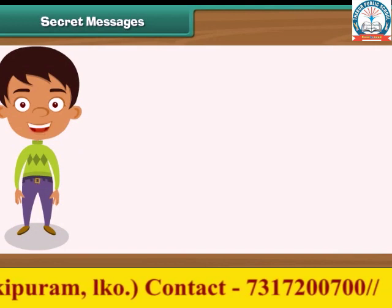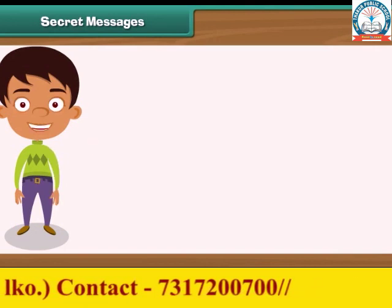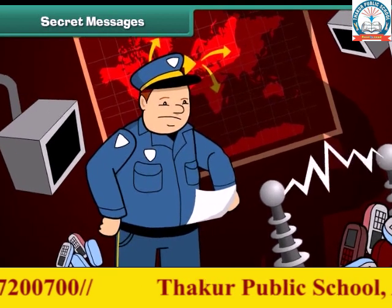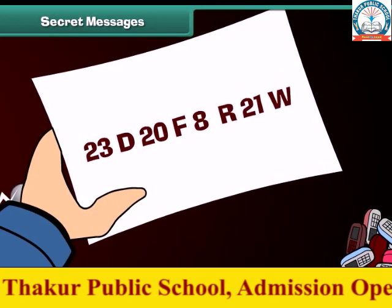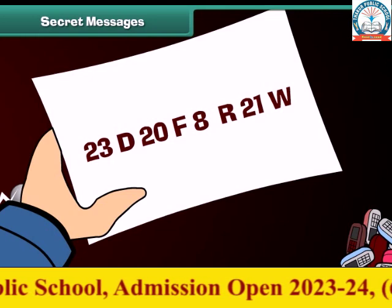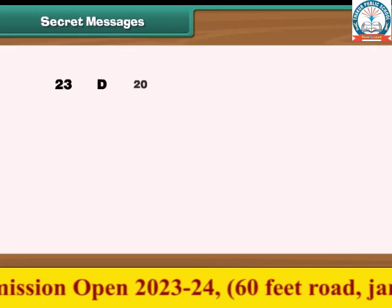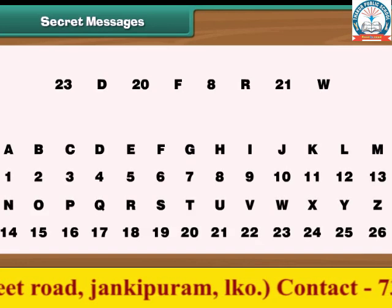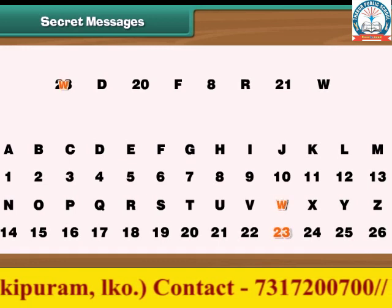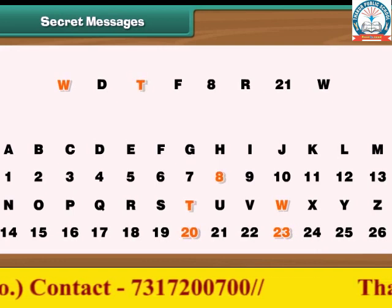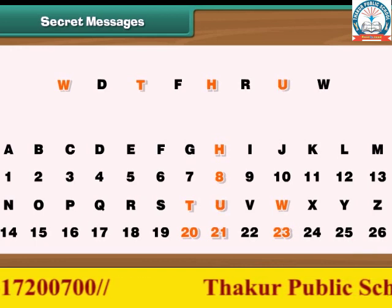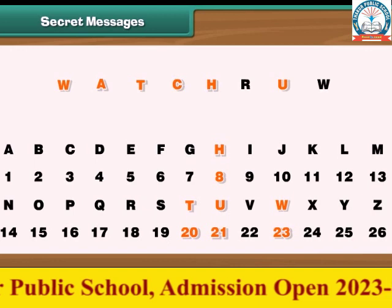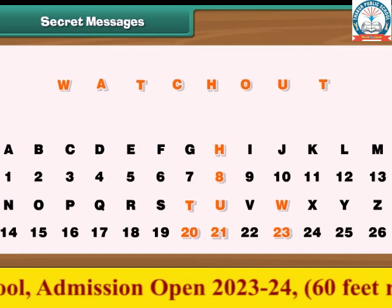Secret messages. You must have read about secret messages in mystery stories and seen their use in war movies. Secret messages are coded in a particular way so that the enemy does not understand them. Let us decode one: 23D, 20F, 8R, 21W. The numbers represent the positions of letters in the English alphabet — W, T, H, U. The letters in the secret message are three places ahead of the actual letters: D is A, F is C, R is O, W is T. So the decoded message is: Watch out!